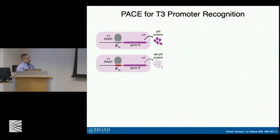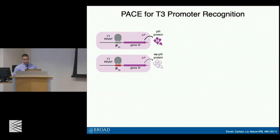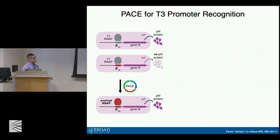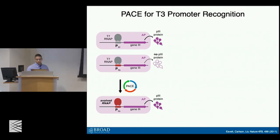Schematically, if we engineer the T7 promoter upstream of the gene 3 cassette, T7 RNA polymerase should faithfully interact with this promoter sequence, transcribe gene 3, and ultimately result in P3 production. Conversely, if we substitute the T7 promoter with the T3 promoter, the production of P3 is dramatically reduced. The hope was that via PACE we could evolve variants that now interact with this T3 promoter.